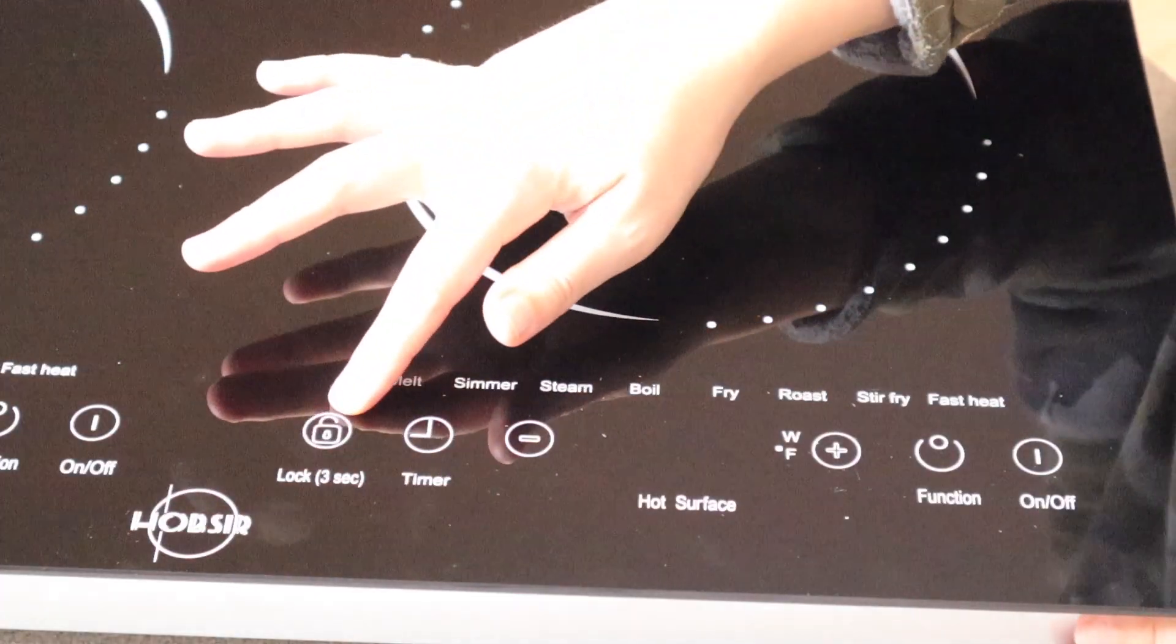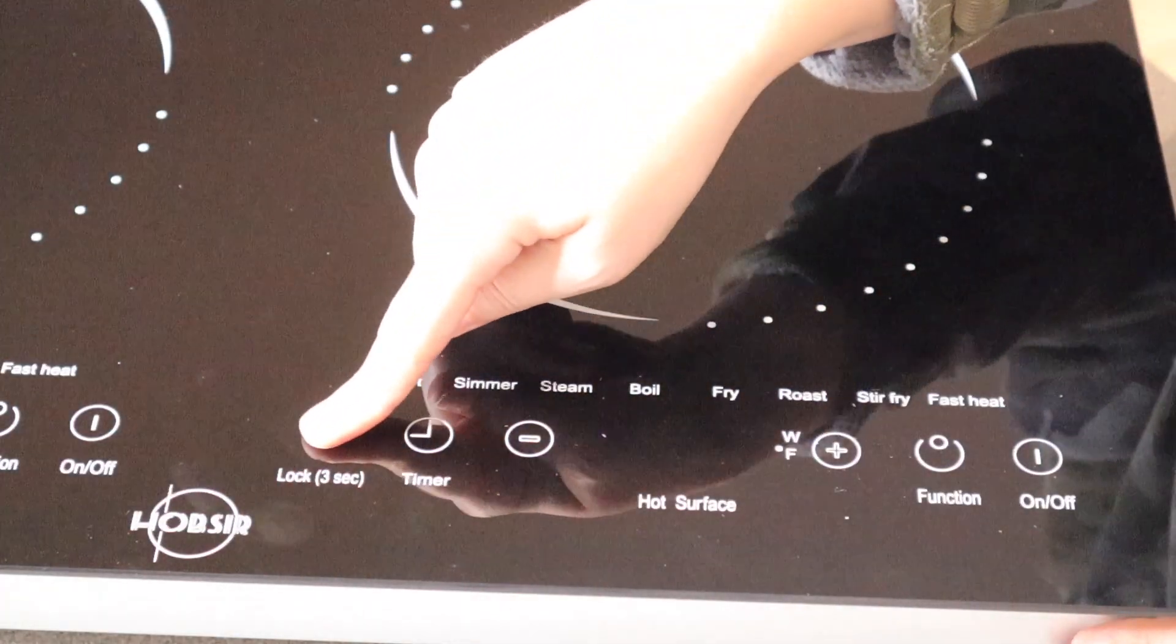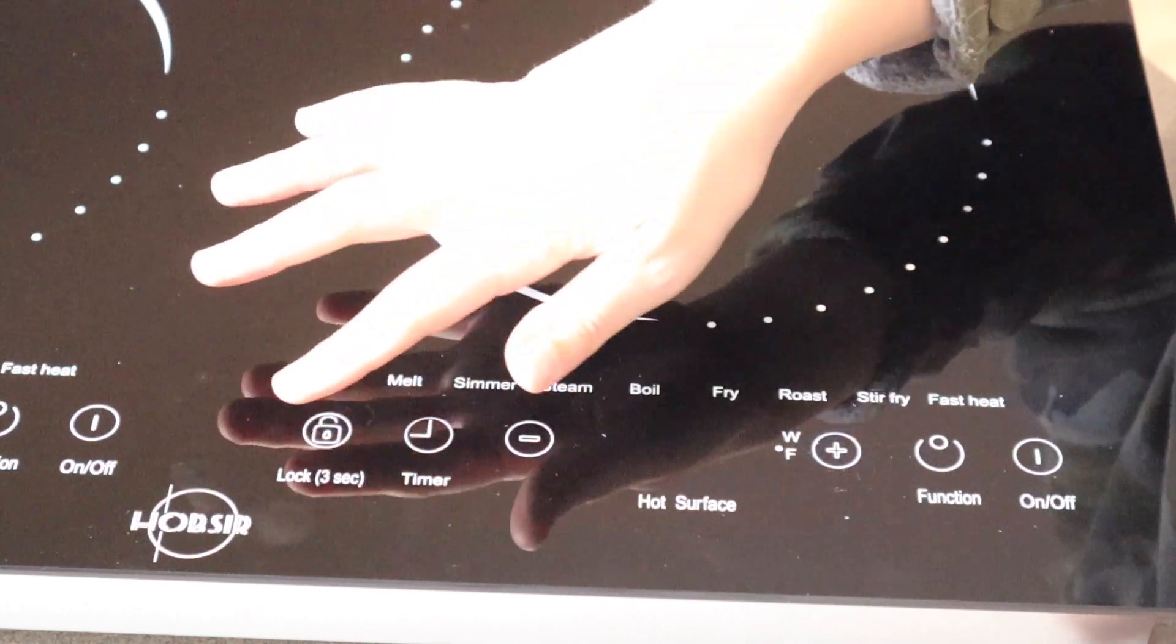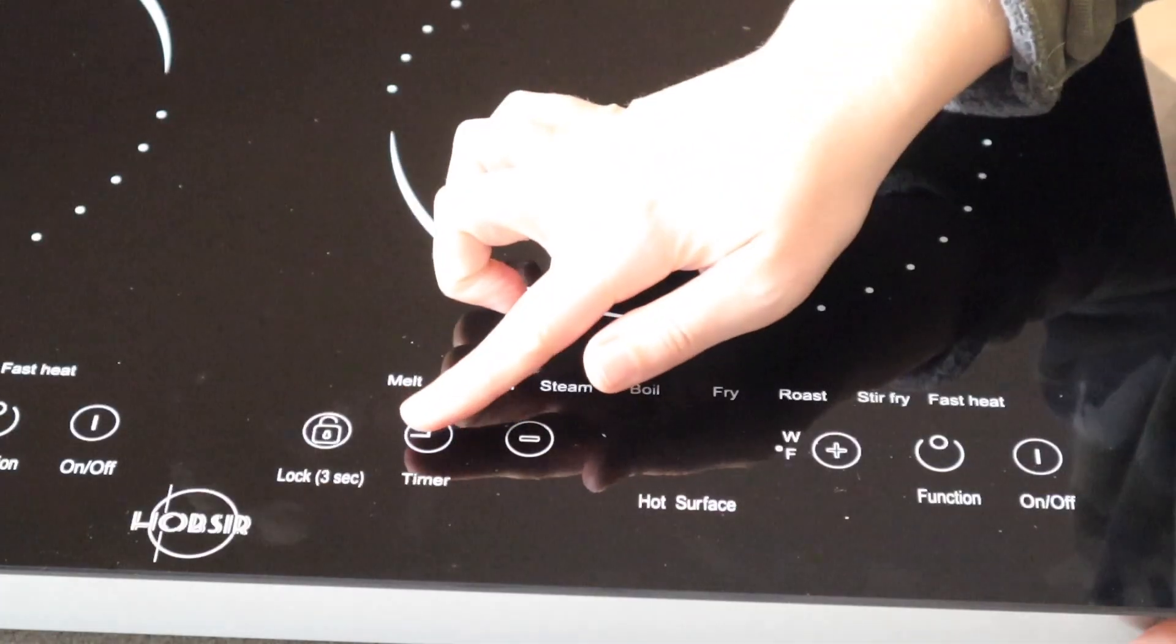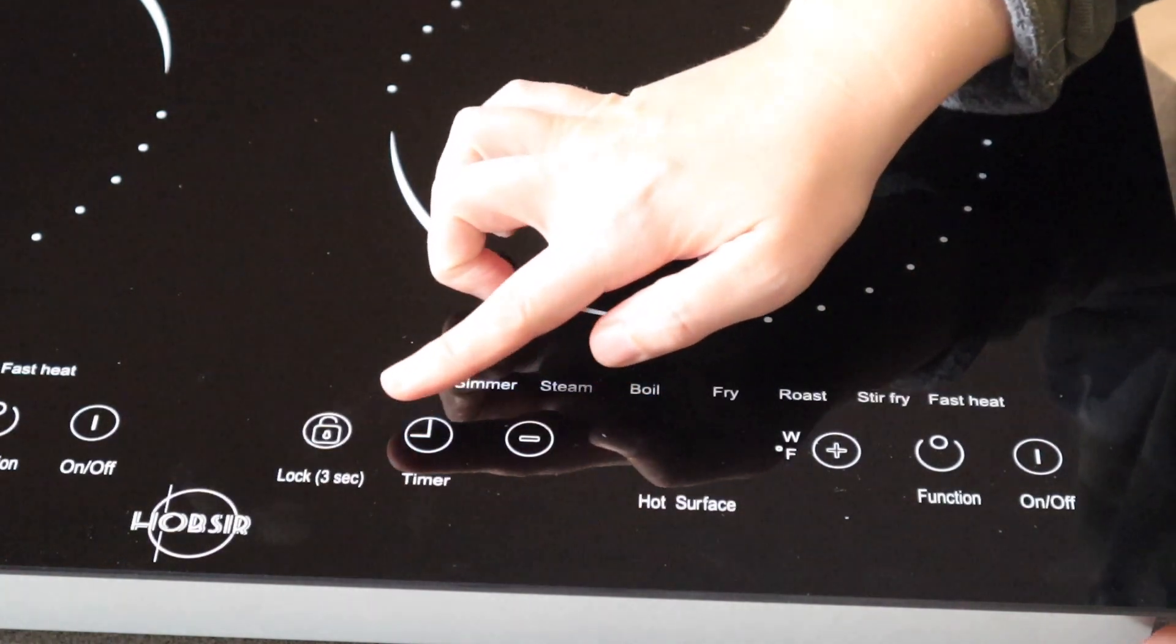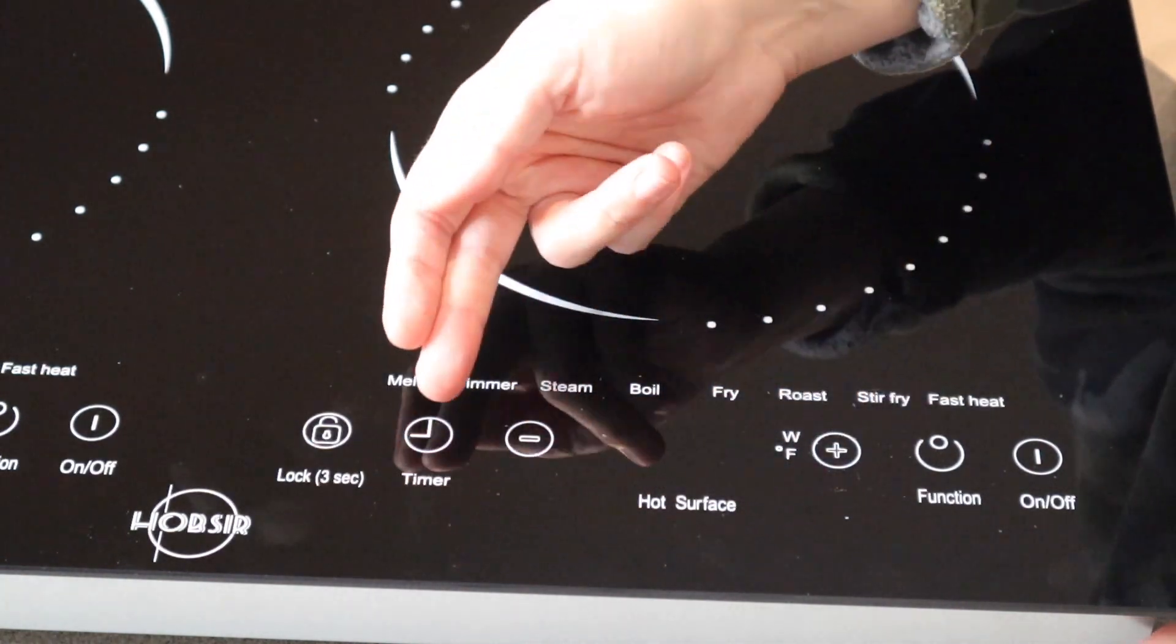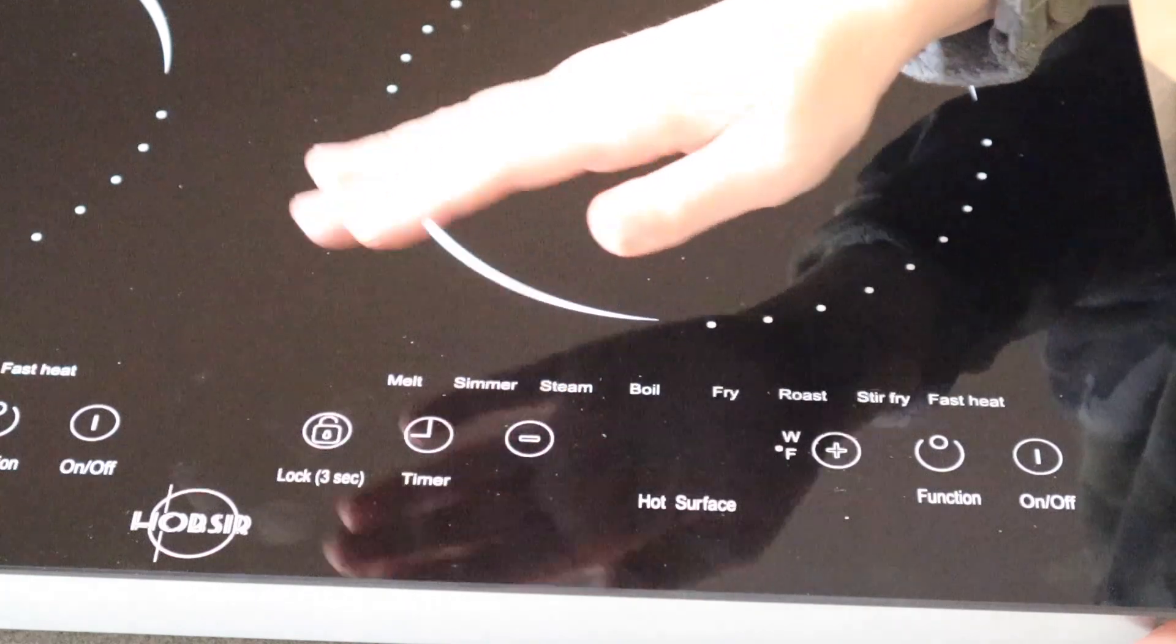So right over here we have a little safety function. If you hold this and press for three seconds, it's going to lock these buttons so that nobody can change your settings. Then right over here you have a timer function, and you have these plus and minus buttons so you can set the timer for the time that you would like.